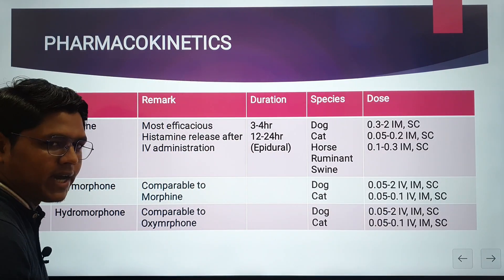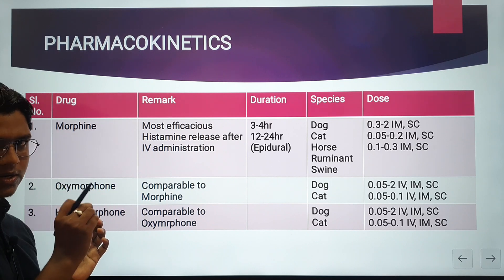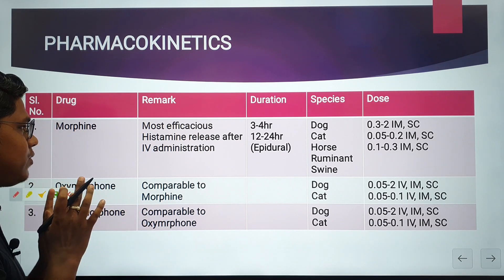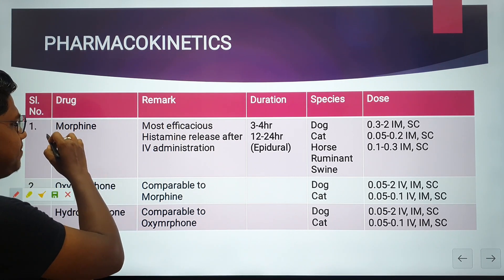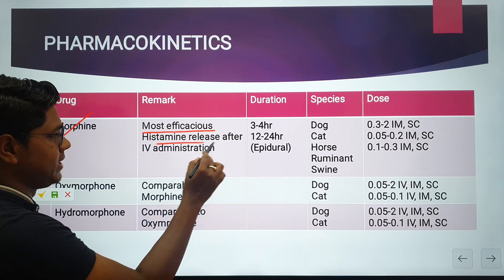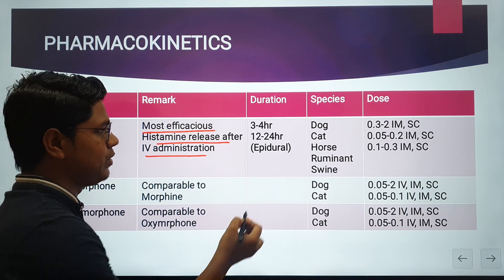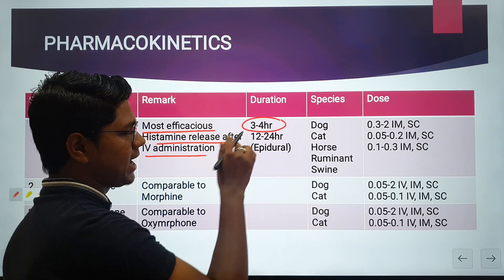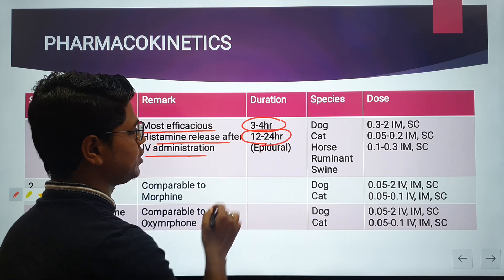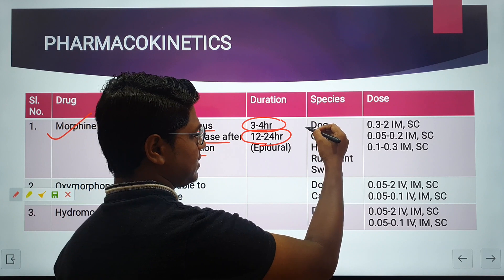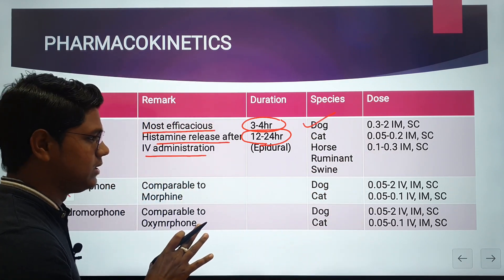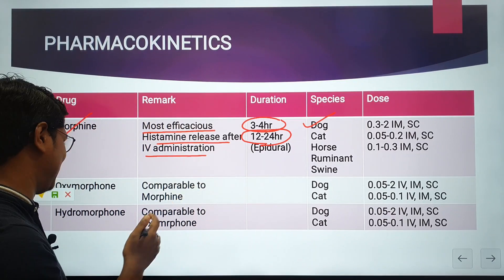Now for pharmacokinetics, we will go through each drug. First, morphine — very efficacious, one of the best painkillers available. Remember the side effect: histamine release after intravenous administration. Duration of action is 3 to 4 hours. It can also be given epidurally, where it provides a very long period of analgesia of 12 to 24 hours. Dose rates are shown on screen — you can take a screenshot or pause the video.